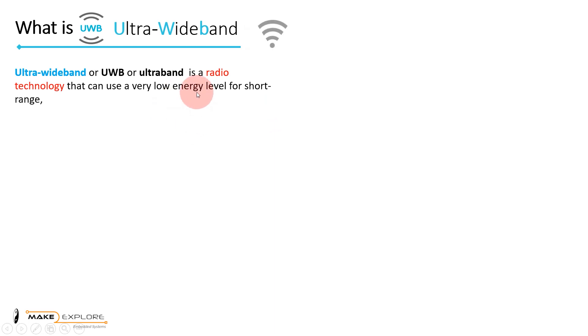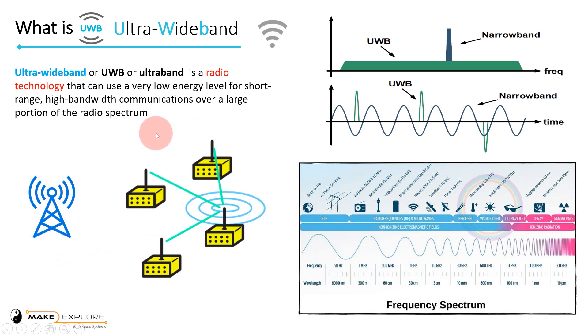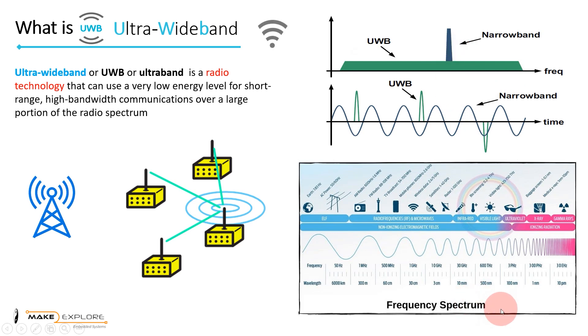So what does actually mean by UWB, the ultra-wideband? As the standard Wikipedia definition says, ultra-wideband or UWB or ultra-band is a radio technology that can use a very low energy level for short-range, high-bandwidth communications over a large portion of the radio spectrum.